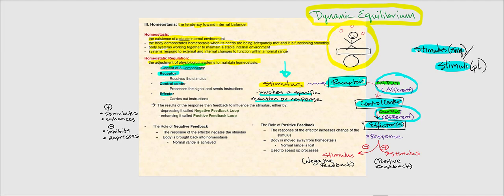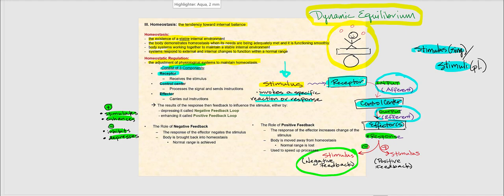Regarding symbols I use: a plus symbol means stimulates or enhances; a negative symbol means inhibition or depression — not positive or negative ions. So if we look at a negative symbol on the response, this means the response of the effector will inhibit, depress, or negate the stimulus. That is part of what we call the negative feedback loop.